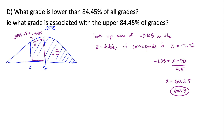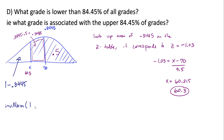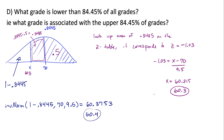This makes sense because 60.3 falls below the mean of 70. For the calculator, we need the area to the left of the unknown value, which is 1 − 0.8445. Using inverse normal with that area, mean = 70, standard deviation = 9.5, we get 60.3753, which rounds to 60.4 — close enough to match our table result.